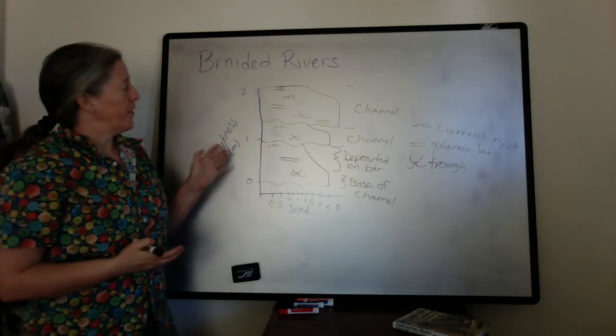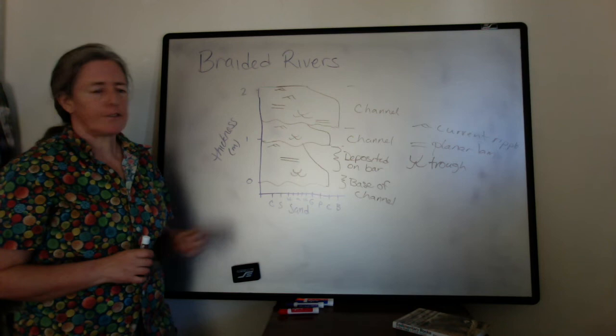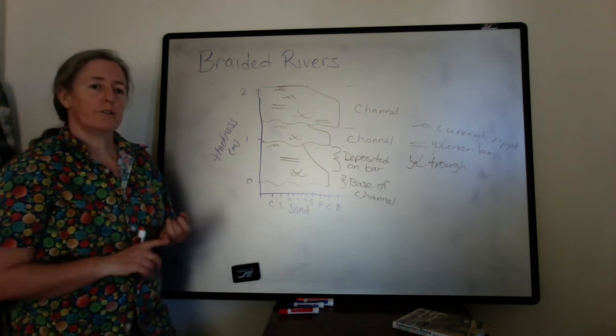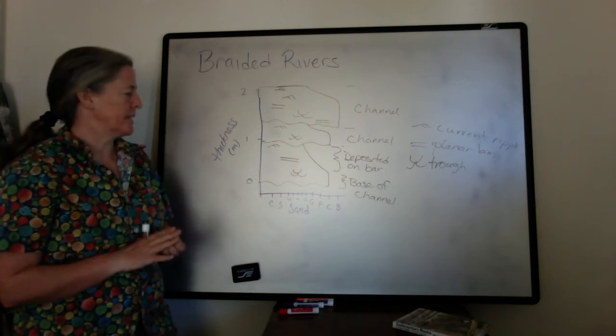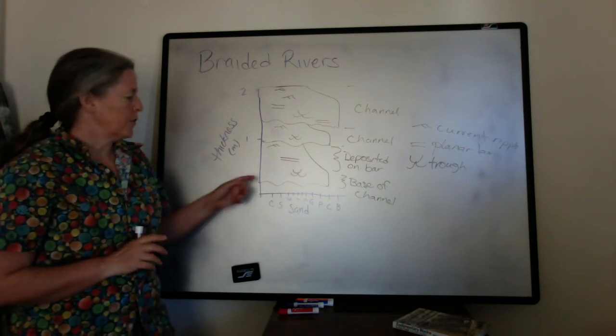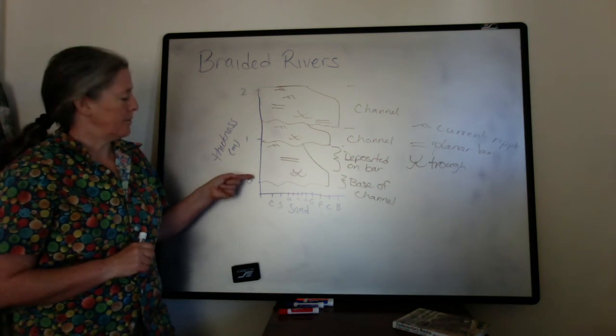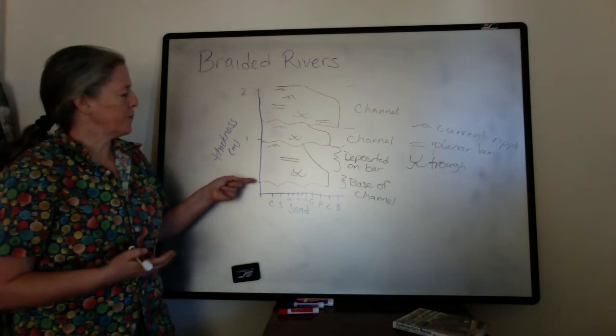So if we were going to define facies for braided river channel, the characteristics would include the sedimentary structures, the grain size, and their relationships to each other. So we could define them as being a group of rock.